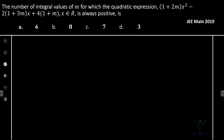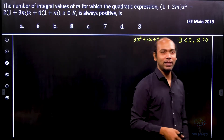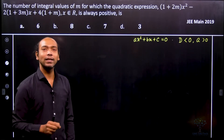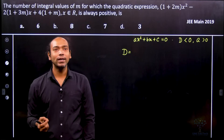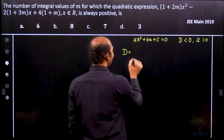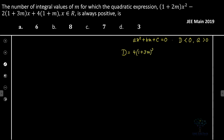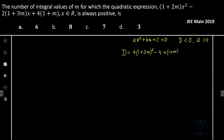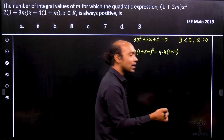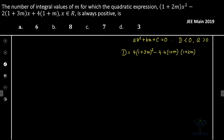The two conditions are: discriminant less than zero and a greater than zero — then there will be no real roots and the quadratic is always positive. For the quadratic ax² + bx + c, let's calculate the discriminant. Discriminant D = b² − 4ac. Here b is −2(1 + 3m), so b² = 4(1 + 3m)². Then 4ac = 4·(1 + m)·(1 + 2m).